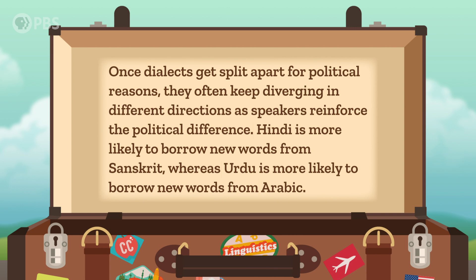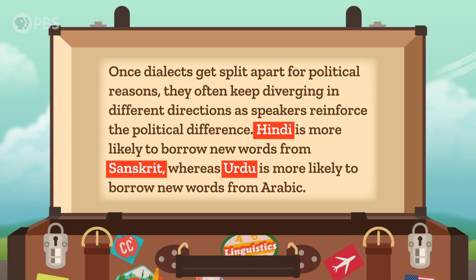Another complication in deciding what counts as a language is identity and politics. Individuals, communities, and governments might want to appear similar to each other, or establish their differences. Their decisions to alter their image through language have had a range of consequences, from different alphabets to deliberately suppressing languages. Hindi, spoken in India and written with the Devanagari script, is treated as a separate language from Urdu, spoken in Pakistan and written with the Arabic script. But when spoken out loud, they are about as mutually intelligible as US and British English. Hindi and Urdu are counted as distinct languages for political reasons, not linguistic ones. Once dialects get split apart for political reasons, they often keep diverging as speakers reinforce the political difference — Hindi is more likely to borrow words from Sanskrit, whereas Urdu is more likely to borrow from Arabic.